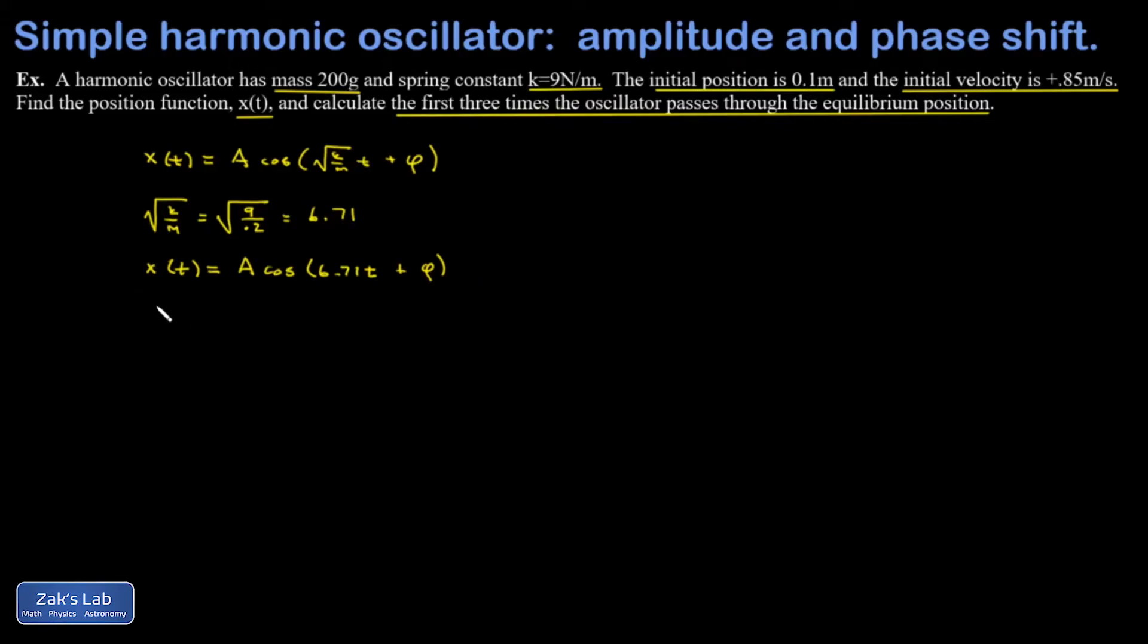x of 0. When I plug in t equals 0, I get A cosine of φ, and that's equal to 0.1. Now I find the velocity function in general so that I can prepare to apply that initial condition.